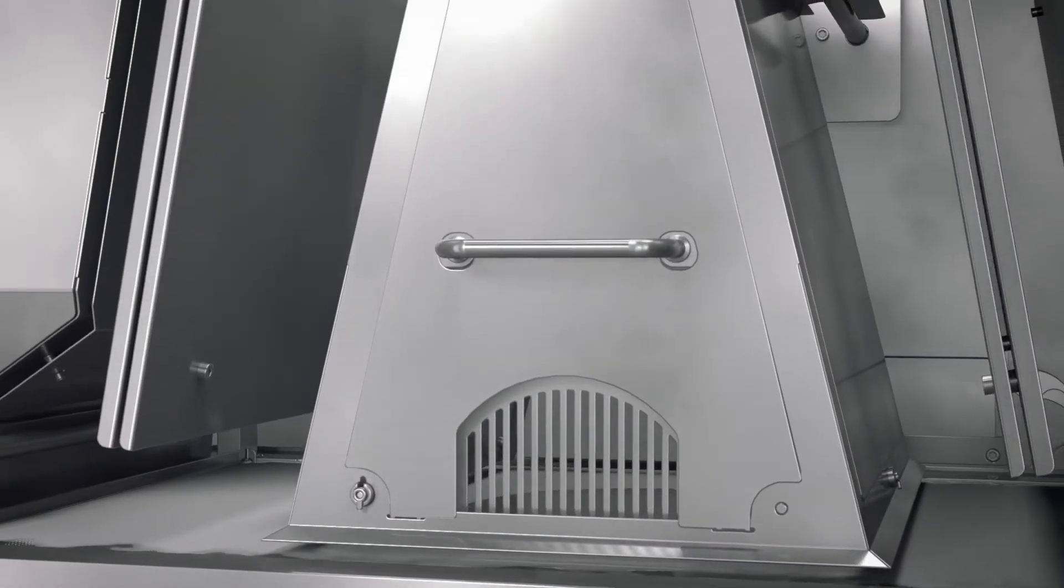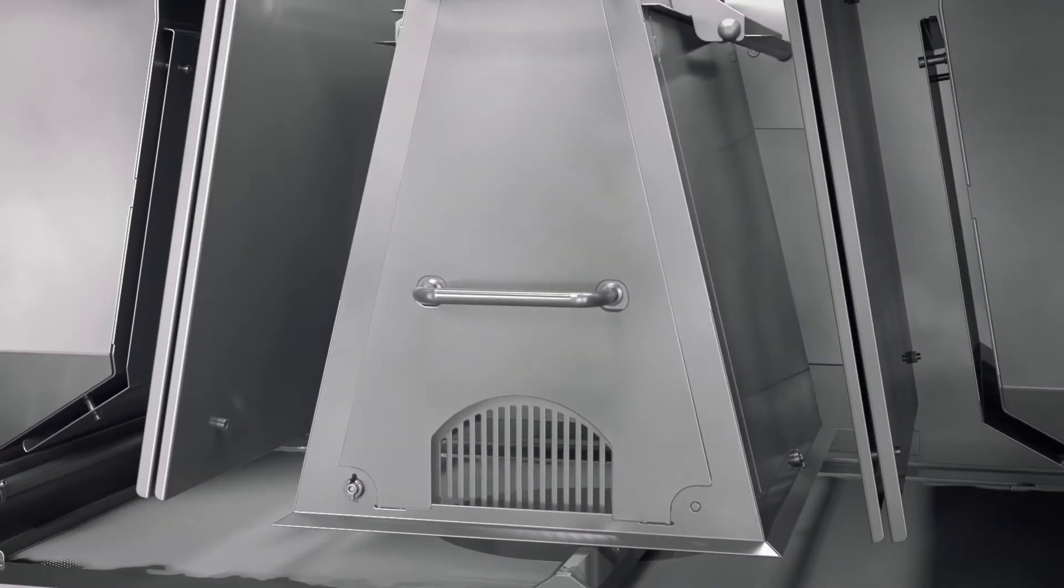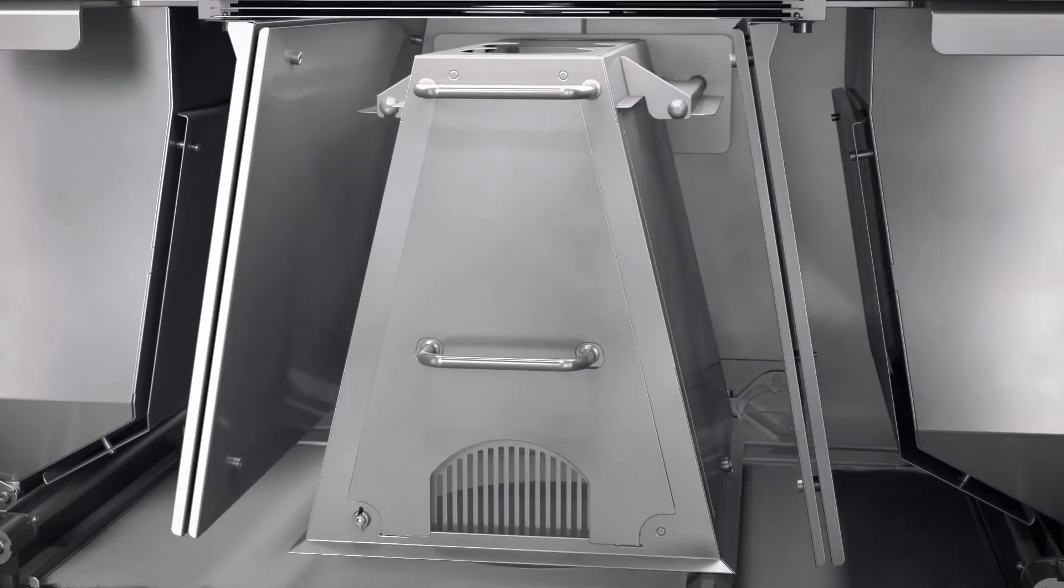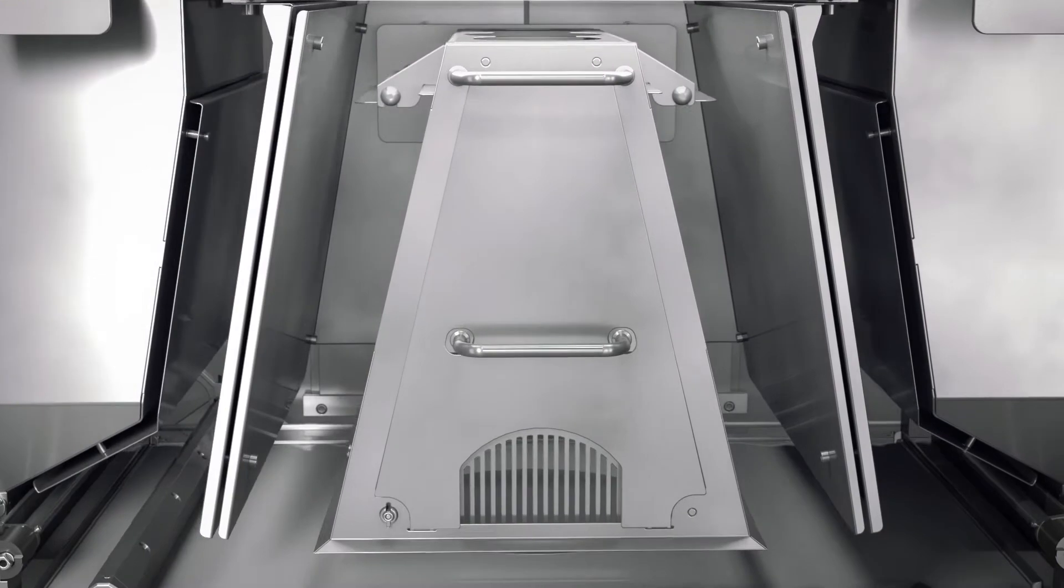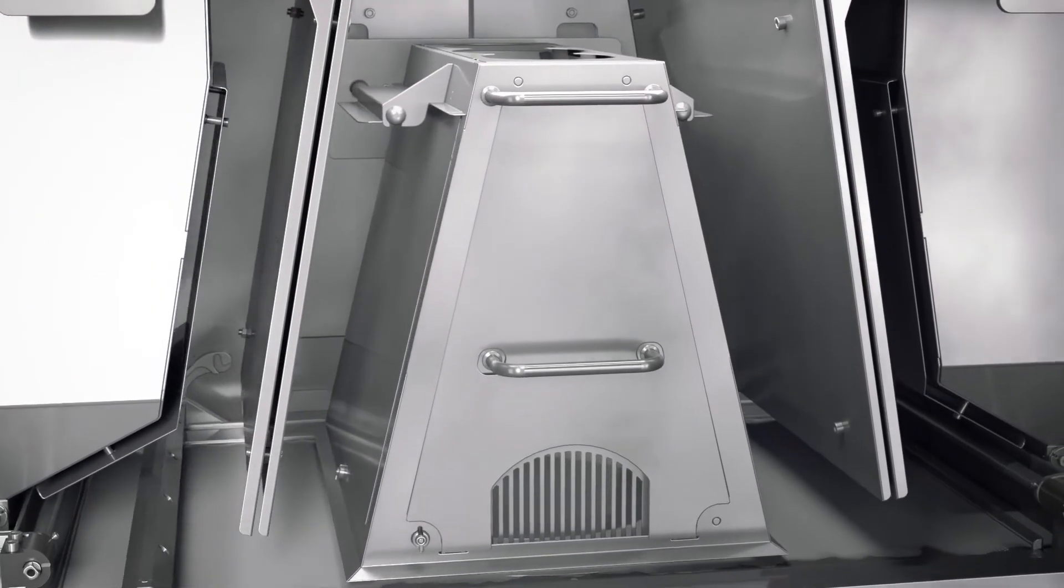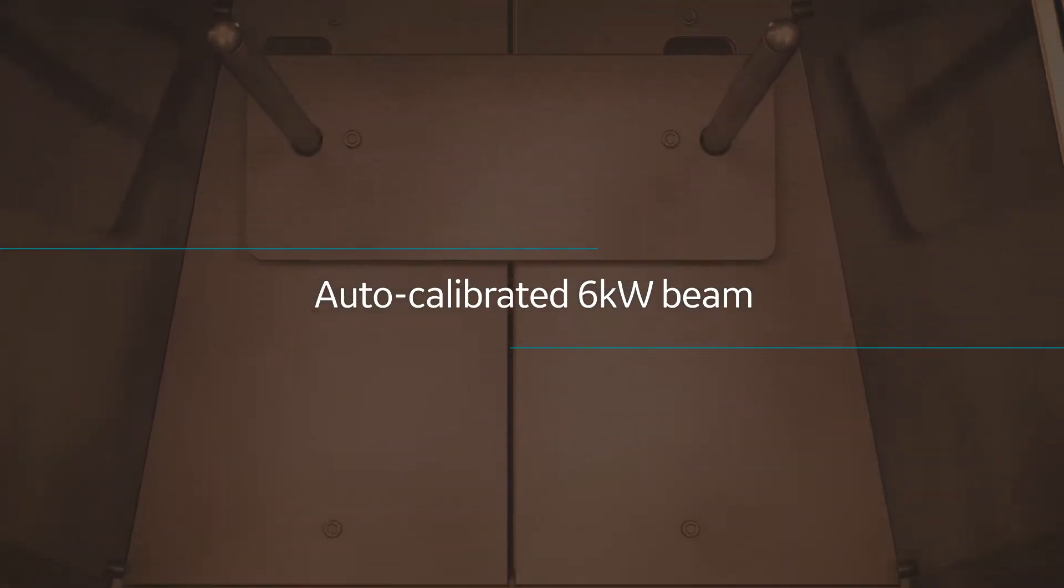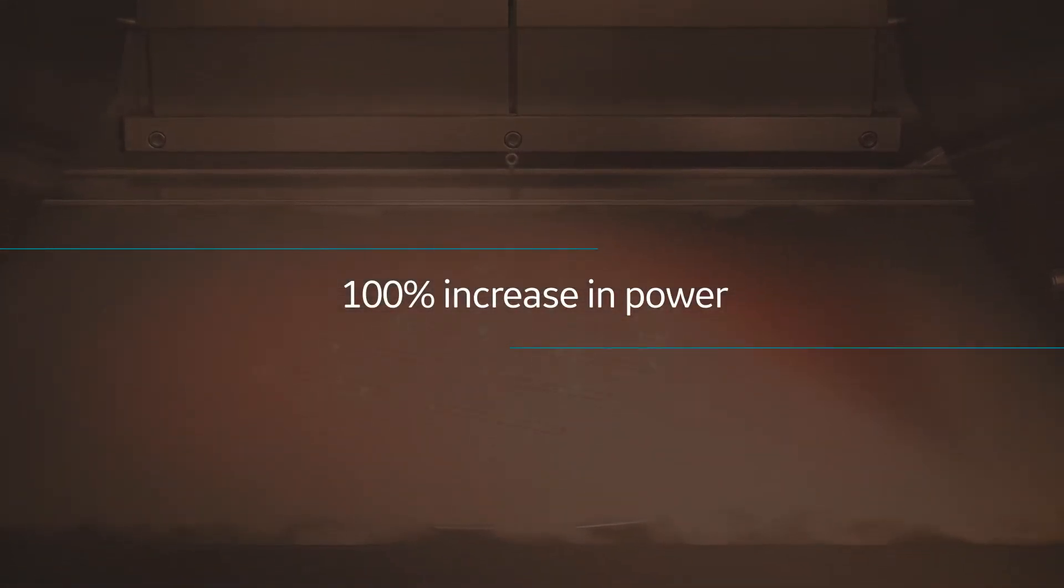Key to Spectra H's ability to deliver market-leading high-temperature production is the newly designed build chamber. Moveable heat shields create improved insulation, forming the ideal environment for exceptional part production. An auto-calibrated 6-kilowatt beam delivers a 100% increase in power.